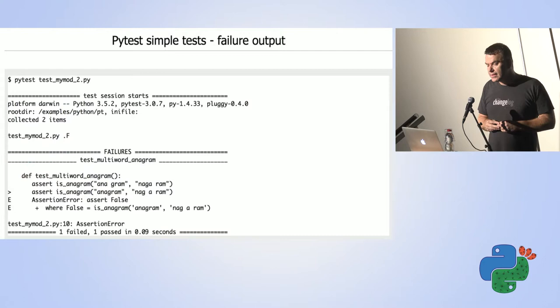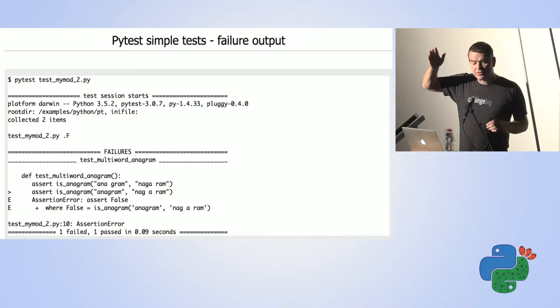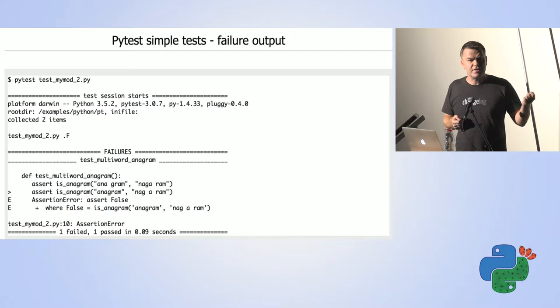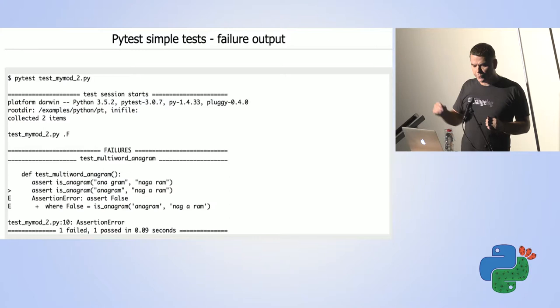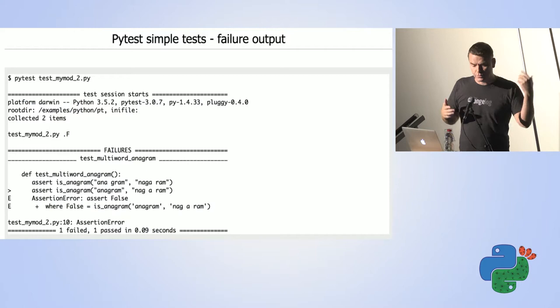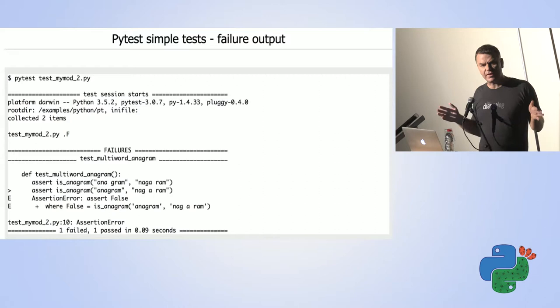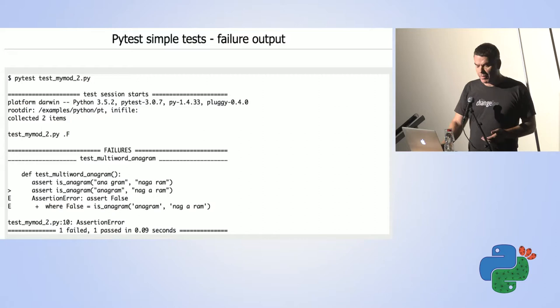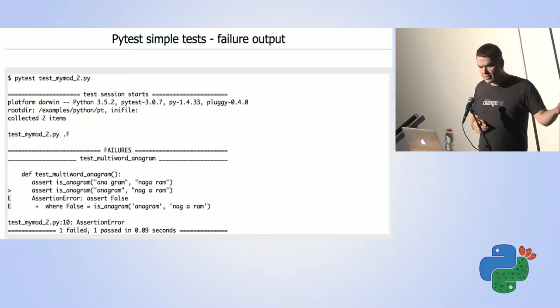We run it with PyTest and get the report. We see 'collected 2 items' because now we have two test functions. Below the filename, you can see a dot — the first test passed — and an F, meaning the second test failed. In the details, you can see the first assert passed, but the second one — marked with an arrow — is the assert that failed. We were expecting true and got false. At the bottom: one failed and one passed. The bug is confirmed.